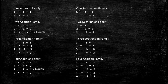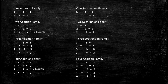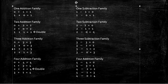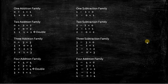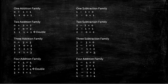Let's say our subtraction families. 1 subtraction family: 1 minus 1 equals 0, 1 minus 0 equals 1. 2 subtraction family: 2 minus 2 equals 0, 2 minus 1 equals 1, and 2 minus 0 equals 2. 3 subtraction family: 3 minus 3 equals 0, 3 minus 2 equals 1, 3 minus 1 equals 2, 3 minus 0 equals 3. So we see a pattern here: 3, 2, 1, 0 and 0, 1, 2, 3. In math, there are lots of patterns.